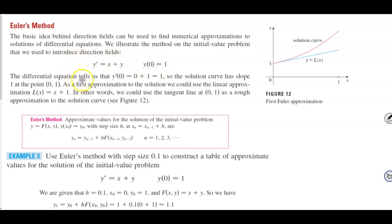Now, the differential equation tells us that when we substitute 0 in for the value of x, it's going to equal 0 plus 1, which is equal to 1. So then we would see that the solution curve has a slope 1 at the point (0, 1). So here at the point (0, 1), you will see that there is a slope of 1.